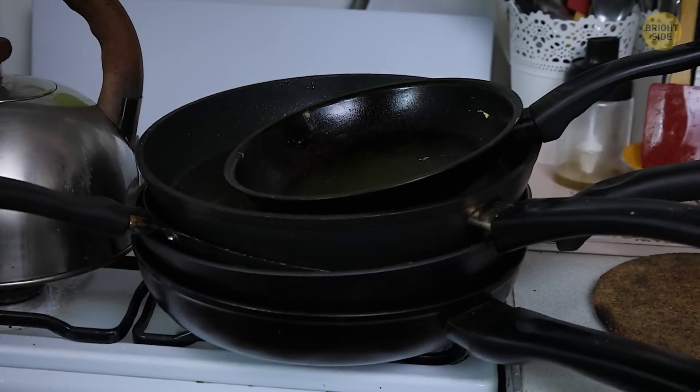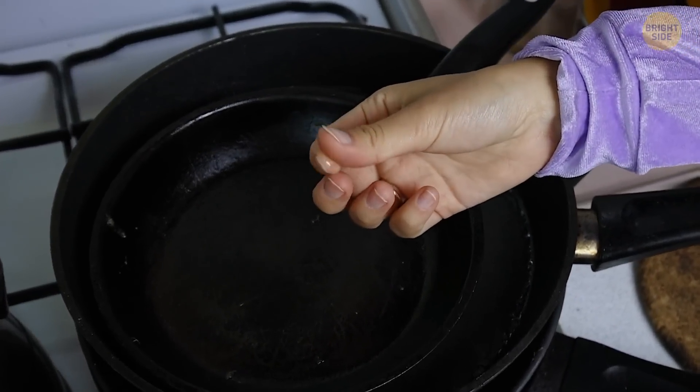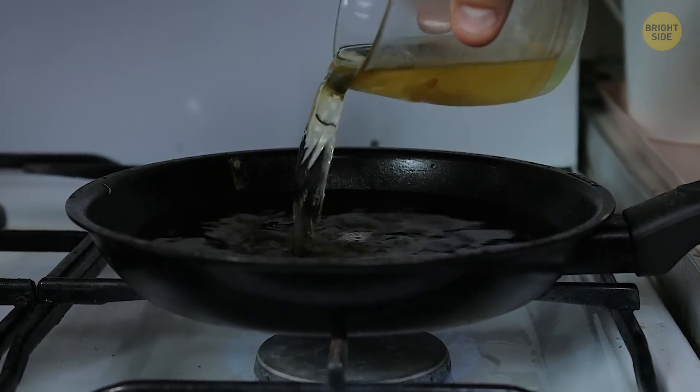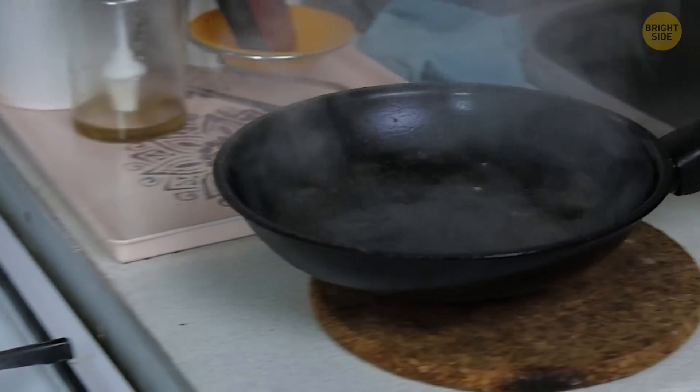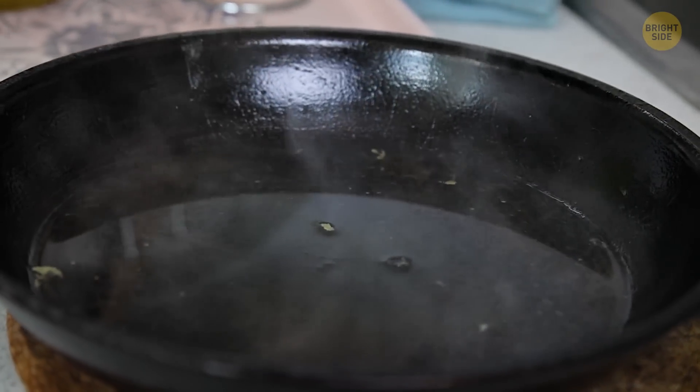Scorched pans tend to use a lot of elbow grease, but they can be cleaned a lot easier with the right ingredients. Fill your pot or pan with water and add in about one cup of vinegar. Bring the liquid to a boil, then remove the pan from the heat before it completely dries up, ensuring there is a small amount of liquid remaining.